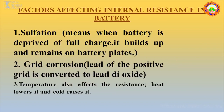In the case of a battery, sulphation means when a battery is deprived of full charge, it builds up and remains on battery plates. Grid corrosion is another factor which increases the internal resistance — the lead of the positive grid is converted into lead dioxide. Temperature also affects resistance: heat lowers the internal resistance and cold raises it.